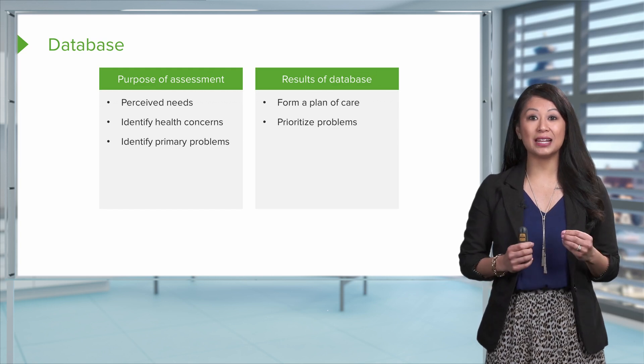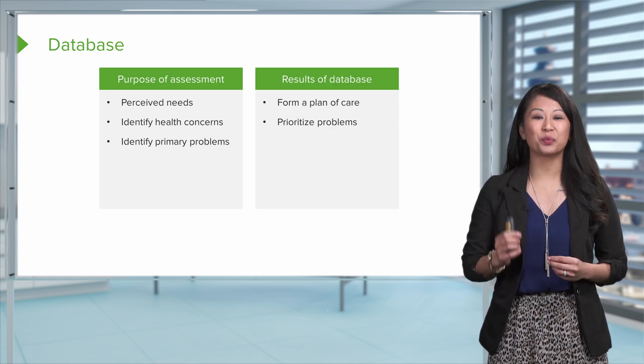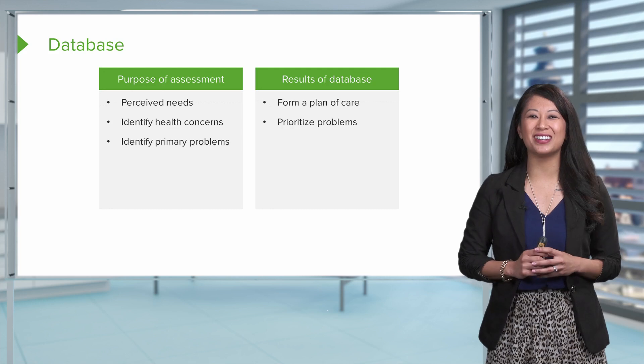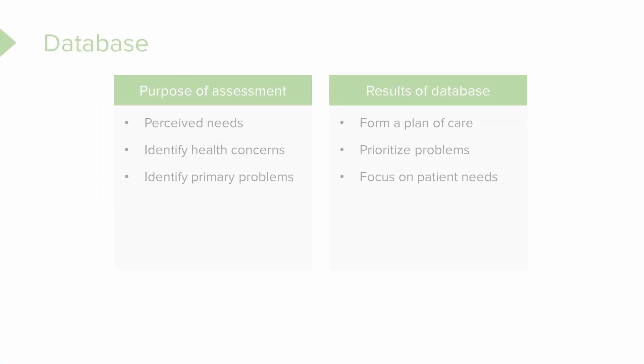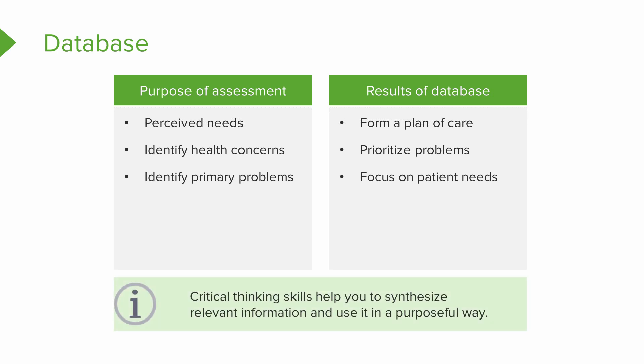Then we can take all that data and that plan of care and prioritize. You're gonna hear that a lot in nursing school. We gotta prioritize the patient's problems. We're gonna focus on our patient's needs. And then we're gonna use our critical thinking skills to help us get all this information, synthesize it, make sense of all this information, and use it in a purposeful way in how we treat our patient.